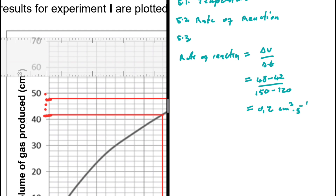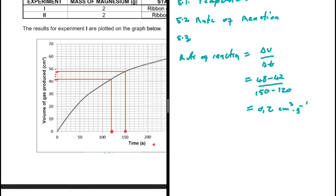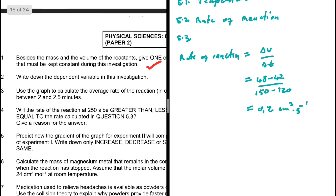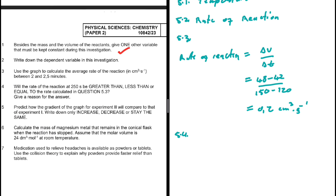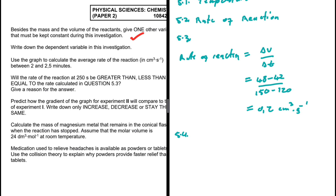That is 0.2 cm³/s — the average rate between those two points. That is question 5.3. Question 5.4: will the rate of reaction at 250 seconds be greater than, less than, or equal to the rate in question 5.3? It is going to be less than.